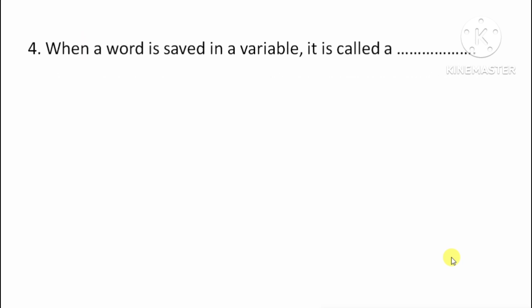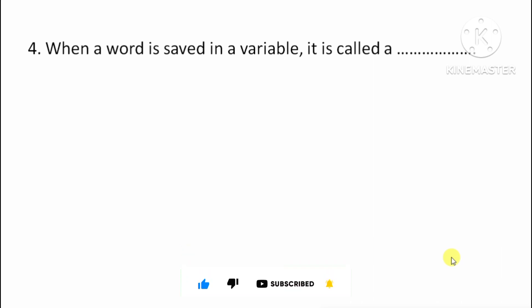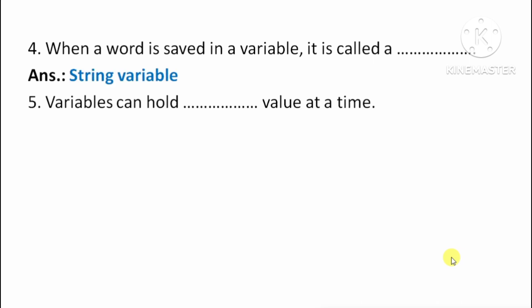Next question: When a word is saved in a variable, it is called a what? Jab variable mein ek word save kiya jata hai to usse kaunse prakar ka variable kaha jata hai? Answer: String variable. Next question: Variables can hold how many values at a time? Answer: One.